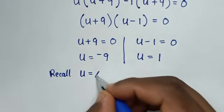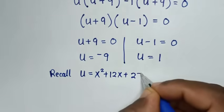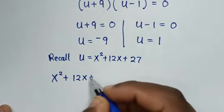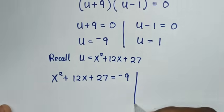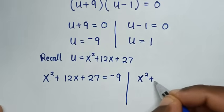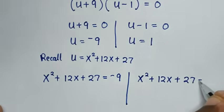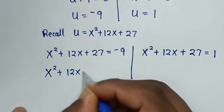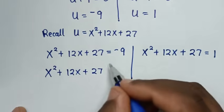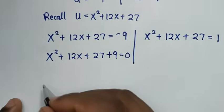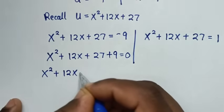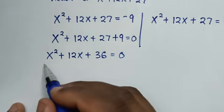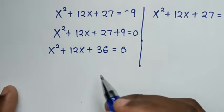Recalling u = x²+12x+27, we substitute back. First solution: x²+12x+27 = −9, so x²+12x+36 = 0.